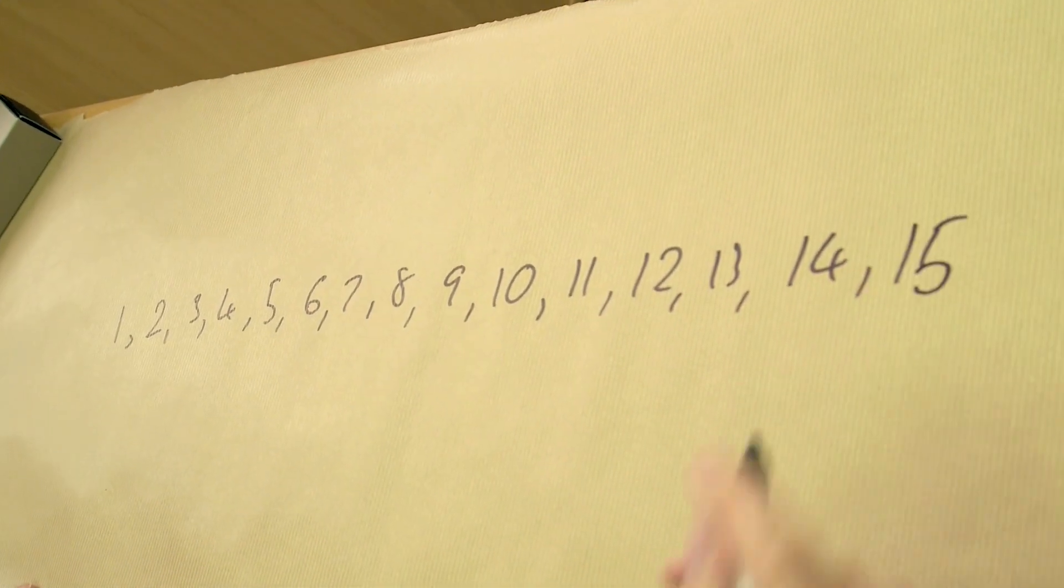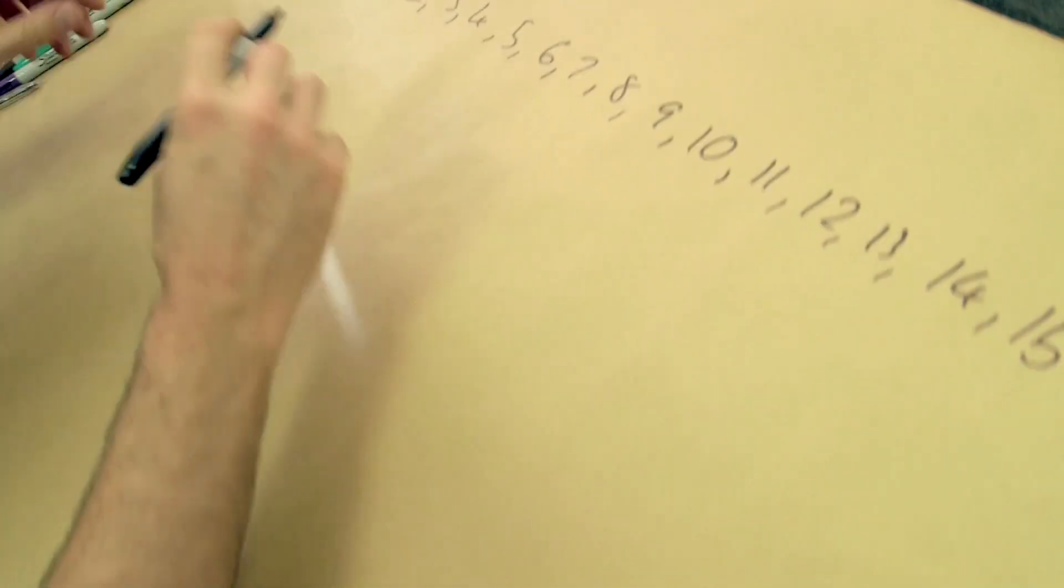Your challenge is, can you take numbers from 1 to 15 and rearrange them into a new order such that any two adjacent numbers add to give you a square number? So, for example, you could put 1... let's give it a go, we'll give it a try.